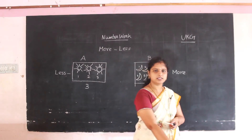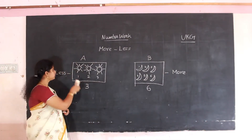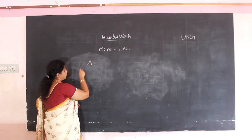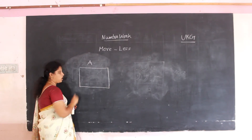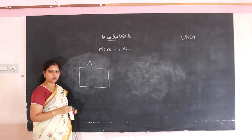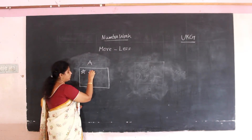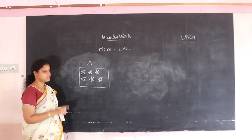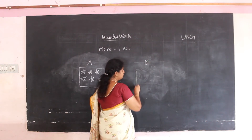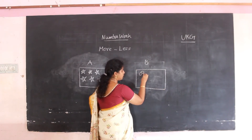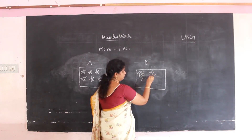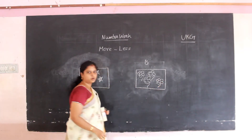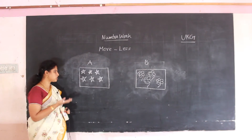Have you understood more and less? Let's look at another example. Copy this in your notebook. Again we have two boxes — box A and box B. I am going to draw some stars inside box A. In box B, we are going to draw some flowers. You can see stars in the sky during night time. In box A there are stars, and in box B there are flowers.